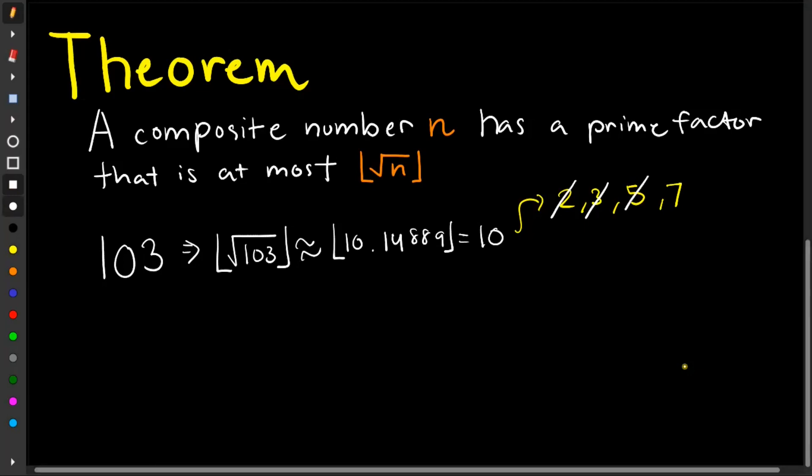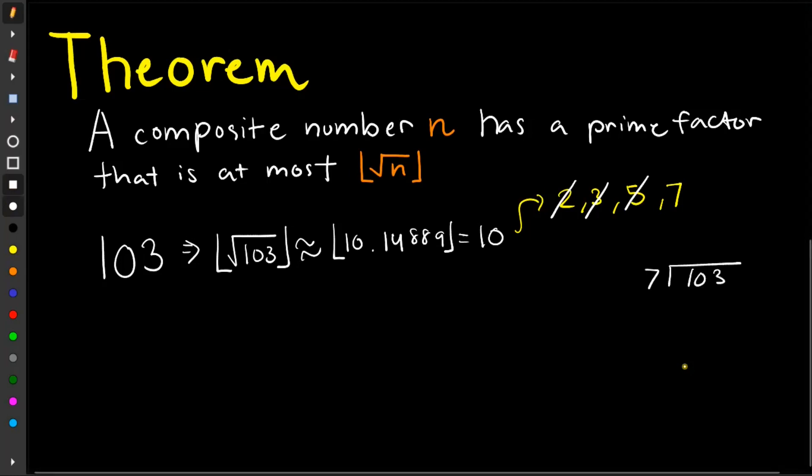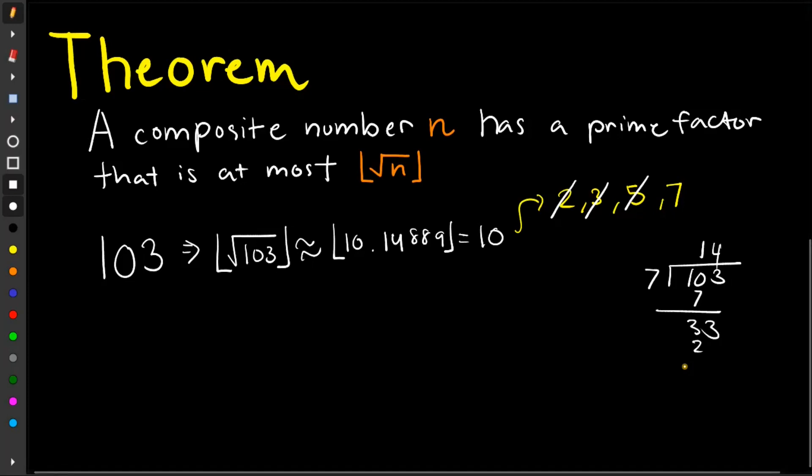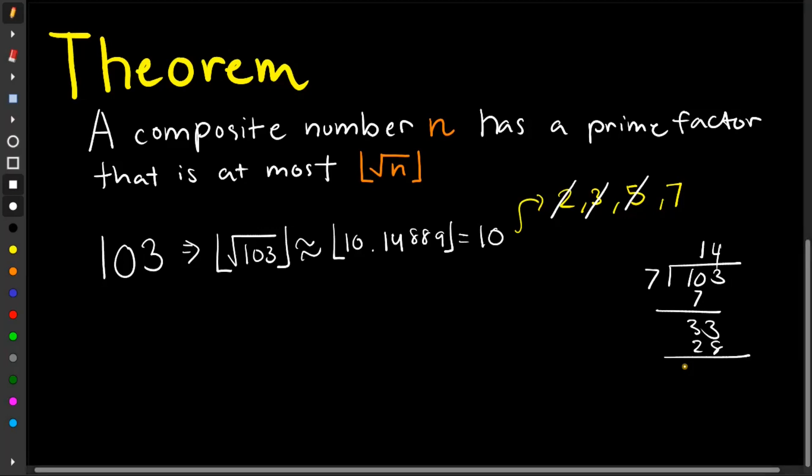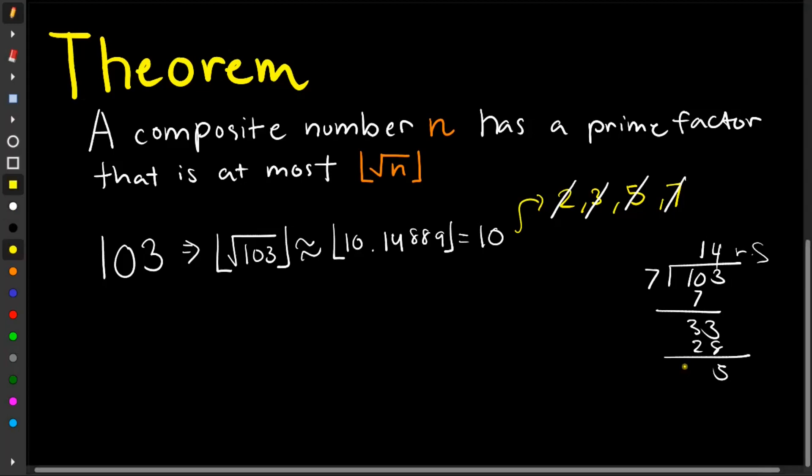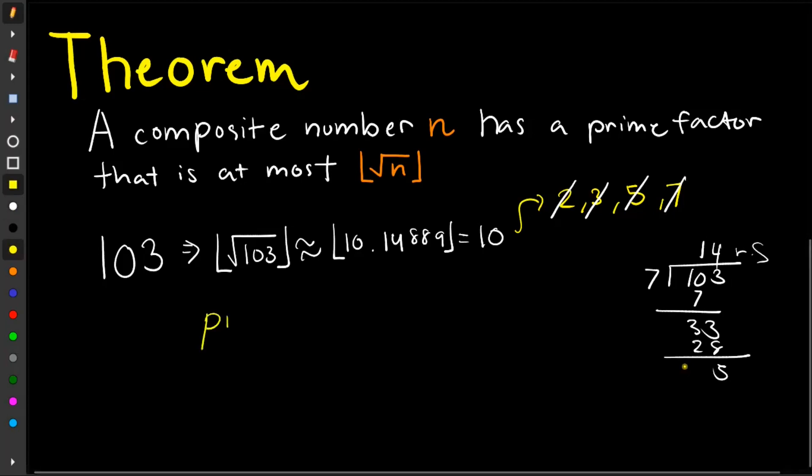Now 7, to check if it is divisible by 7, we divide manually. So we have this is 14 remainder 5, so there is a remainder of 5. So it is not divisible by 7. So hence, again, 103 is prime.